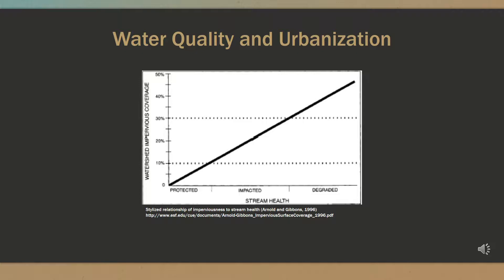In addition, stream health is highly reactive to impervious surface area, and changes can be detected in watersheds when 5% or even less of the area is impervious surface, as seen in the figure. Impervious surface covers 16.4% of the entire study area. This is indicative of widespread development, posing a major challenge to maintaining the natural, physical, and chemical properties of streams.